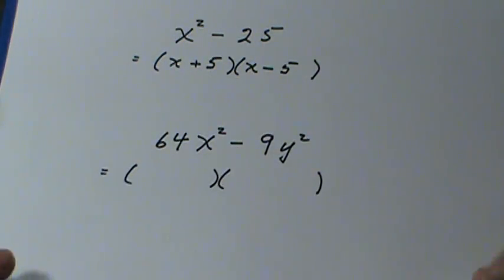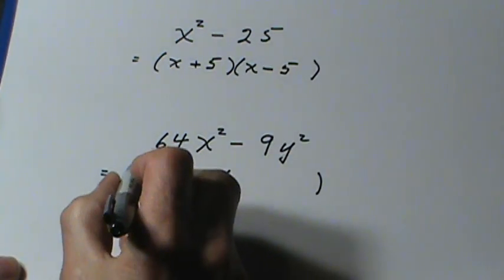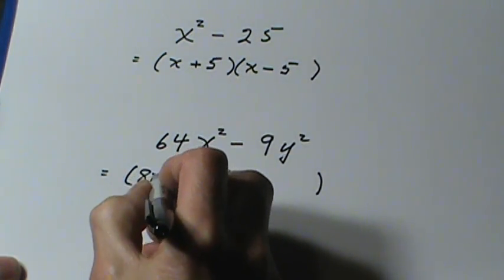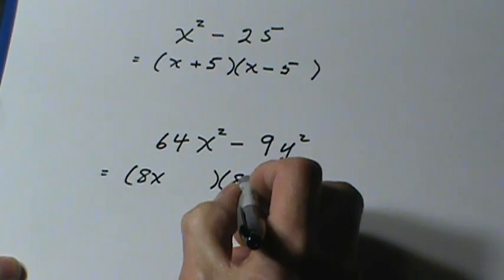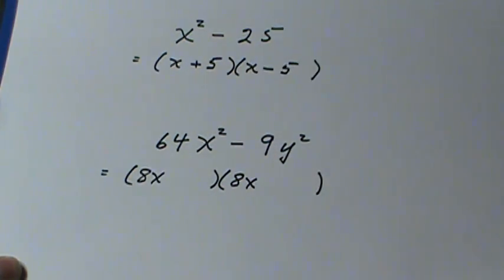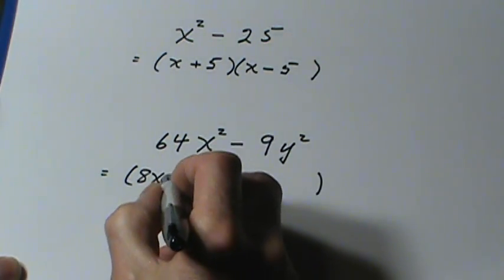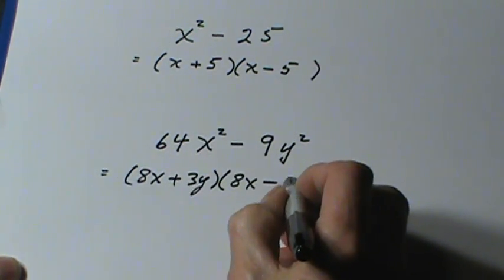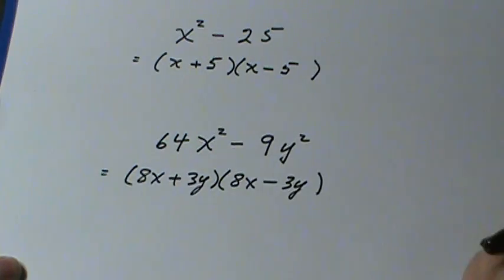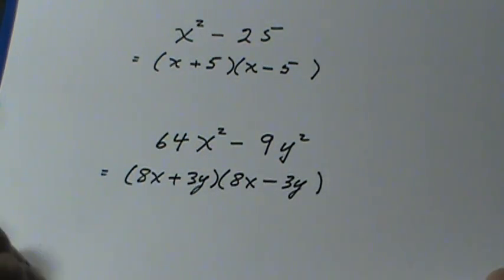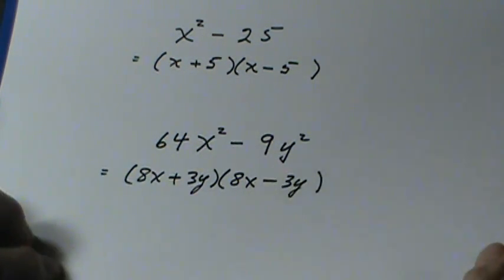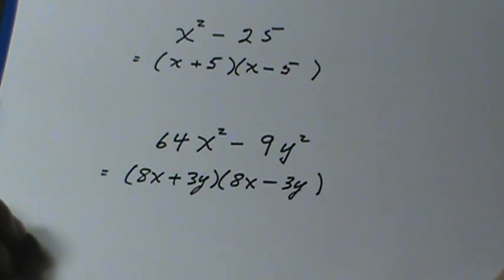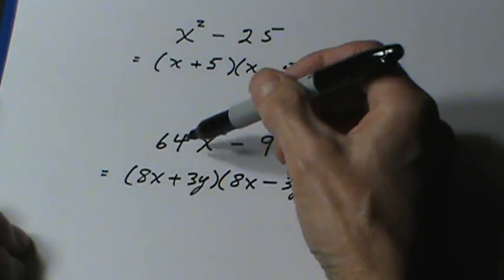Here's another difference of squares, in that I can put an 8x at the beginning of each bracket, that gives me the 64x squared, the signs are different, 3y times 3y gives me the 9y squared on the end, and that's it. These are fairly simple to do if you recognize the difference of squares.